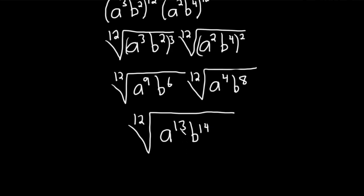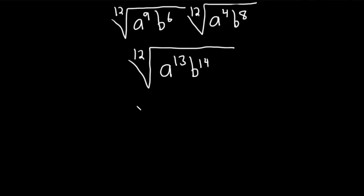And 12 can be extracted from these. So let's do that. So this is going to be the 12th root of a to the 12 b to the 12 12th root of what's left? Well, an a because a to the 1 times a to the 12th is a to the 13th. And a b squared because b squared times b to the 12th is b to the 14th.